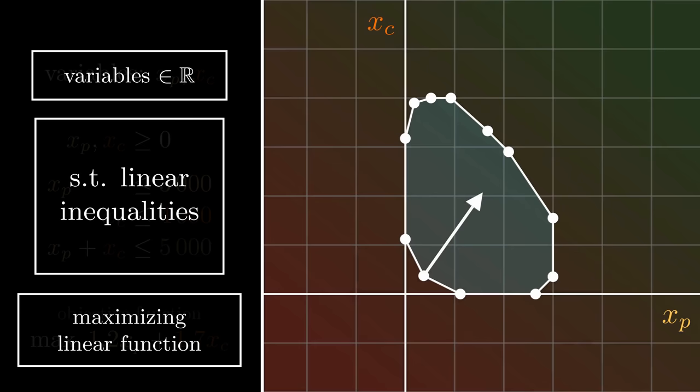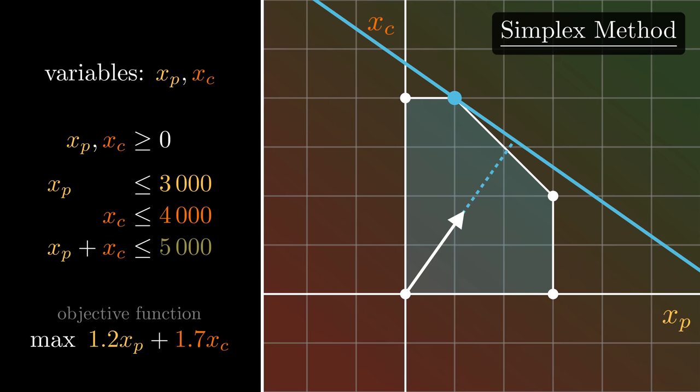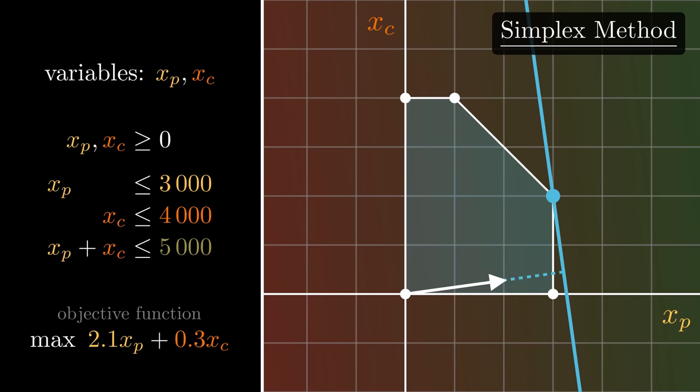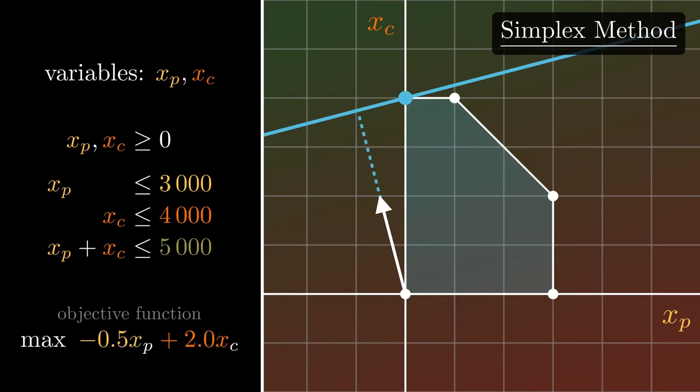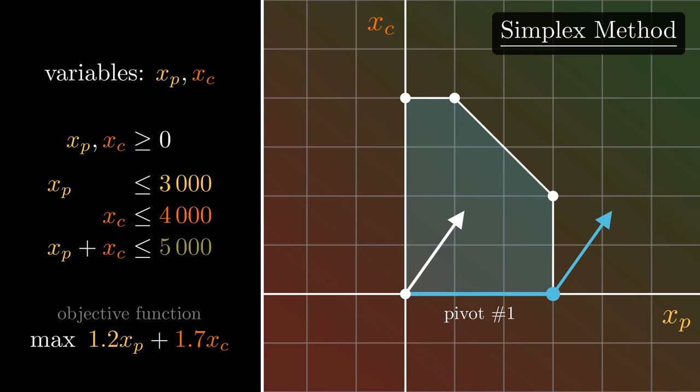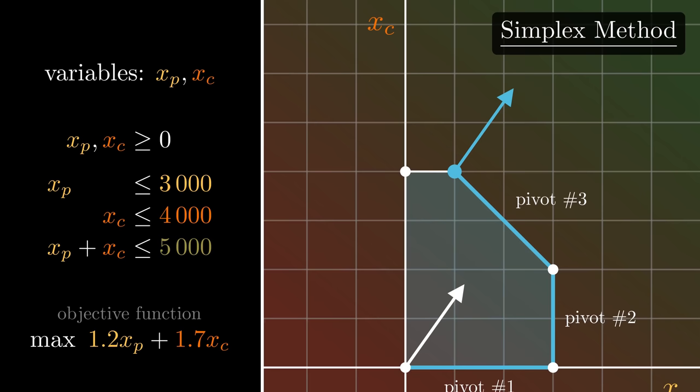Similar to the geometric solution, we will again be moving in the direction of the objective function, but will do so in a smarter way. For this, we'll use the fact that the optimum will be achieved in at least one vertex. It can sometimes be more, like a whole line, but some vertex will still achieve it, as we see by doing a full rotation. This means that we can move from vertex to vertex, which is called pivoting, always picking one that brings us closer to our goal, until we can't any longer, at which point we know we've found the optimum.